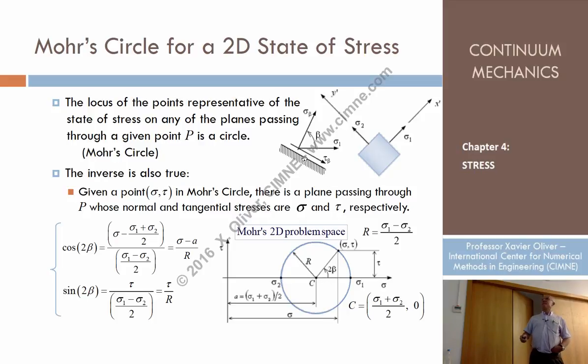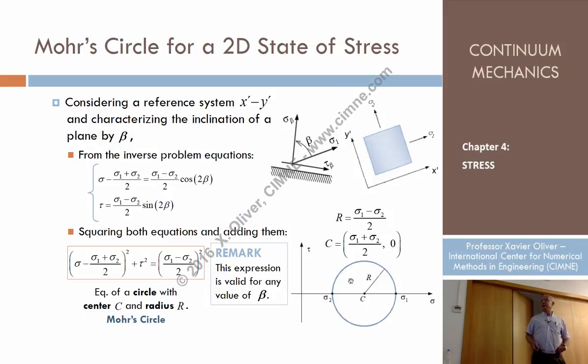So if I move from this plane, clockwise or anticlockwise, an angle beta, for this plane, for the plane sigma 1, what is the representative point? That, right? That is the representative point of the plane.